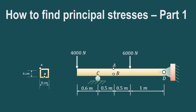In this video we'll try to understand how to find out the principal stresses in case of a beam which has a hollow rectangular section, and we have to find out the stresses induced at points A and B as shown in the side view. The dimensions of this beam are also given.